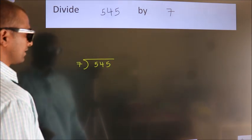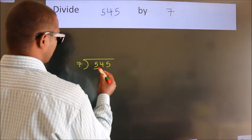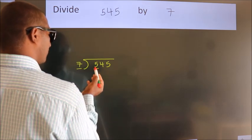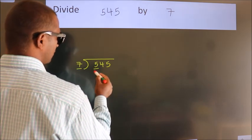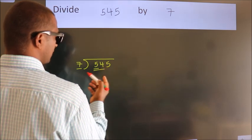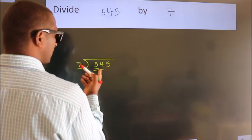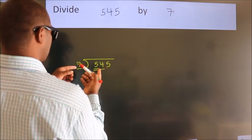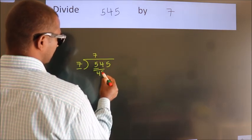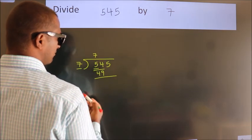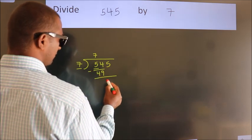Next, here we have 5, here 7. 5 is smaller than 7, so we should take 2 numbers: 54. A number close to 54 in the 7 table is 7 times 7 equals 49. Now we subtract and get 5.